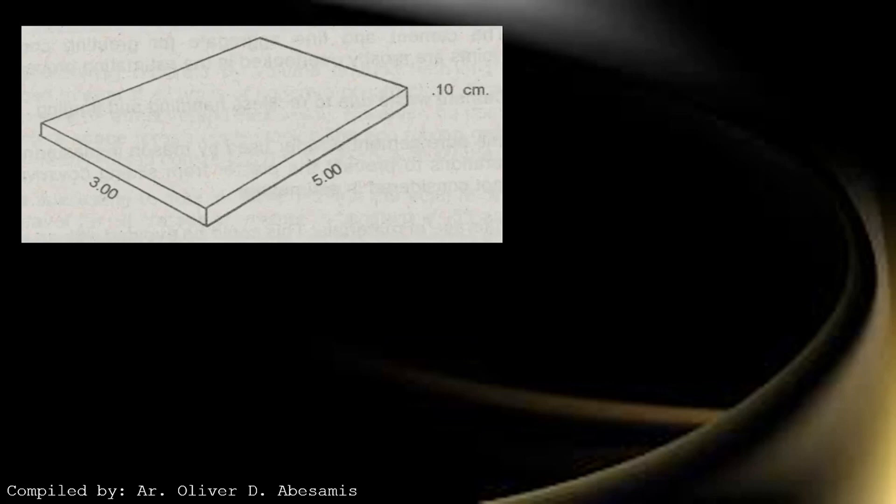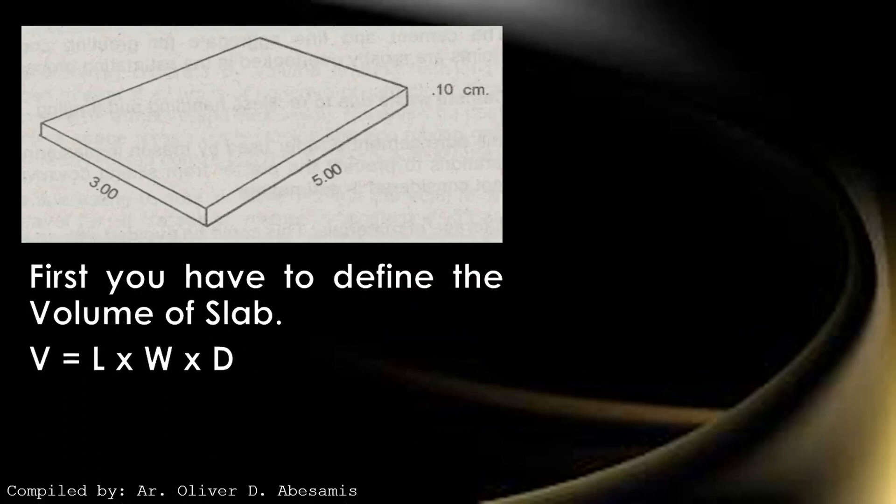We have to define the volume. Volume is equal to length times width times depth. Having a value of 5 meter by 3 meter by 0.1 meter, the total volume of our slab is 1.5 cubic meter.